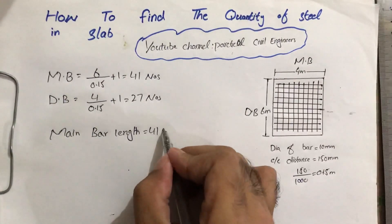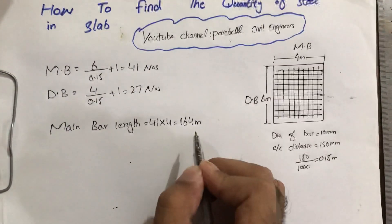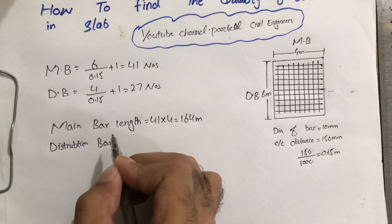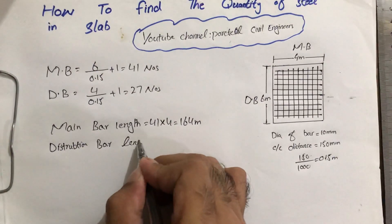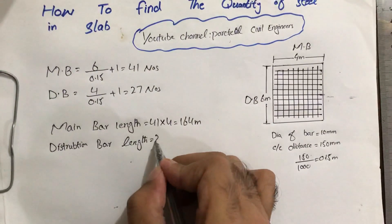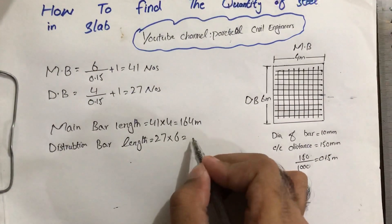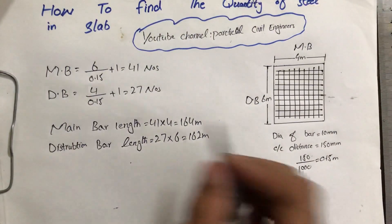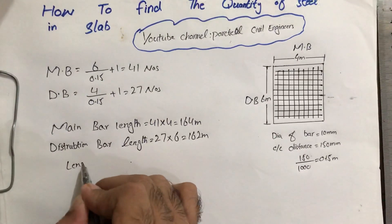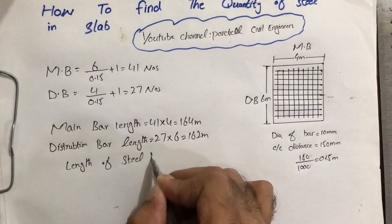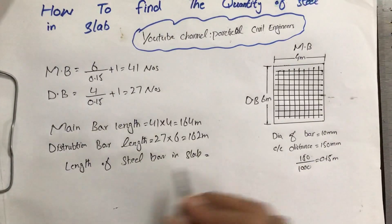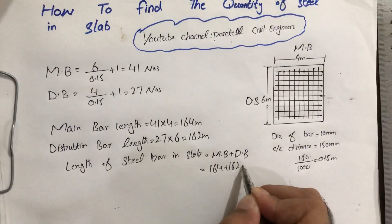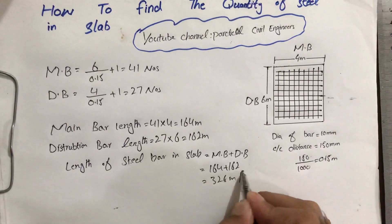The number of main bars is 41 times 4 meters, which equals 164 meters. For distribution bars, length is equal to the number, which is 27 times 6 equals 162 meters. So the total length of steel bar in a slab is equal to main bar plus distribution bar, which is 164 plus 162 equals 326 meters. That is the total length.